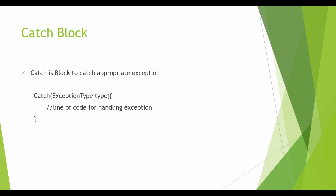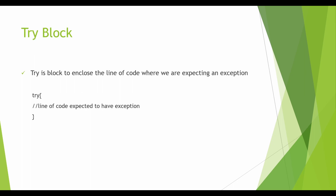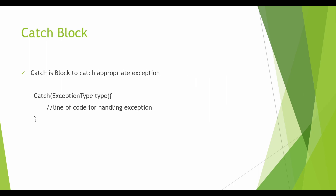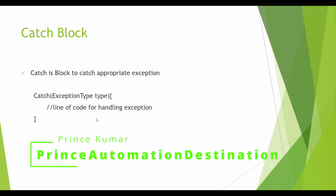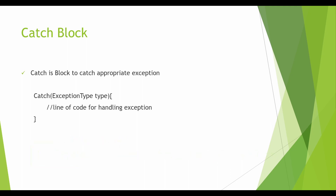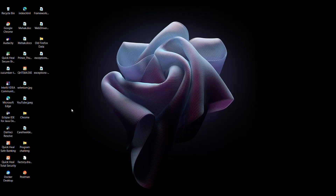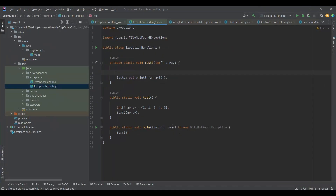So let us move to the catch block. The catch block is nothing but an exception handler. As soon as the exception is thrown, or the object of the exception is created, the runtime will start looking for an appropriate catch block — that is, an appropriate exception handler. For example, if we are getting a NoSuchElementException, the catch block should be capable of handling that specific exception. If it handles any other exception, it is not the appropriate catch block.